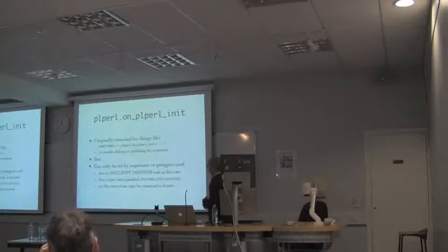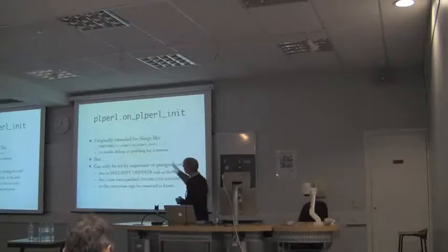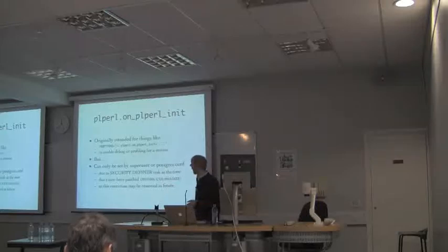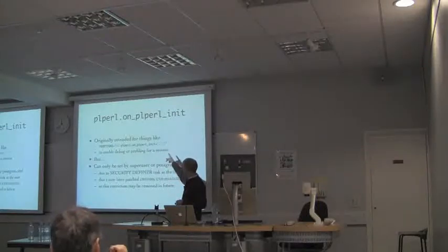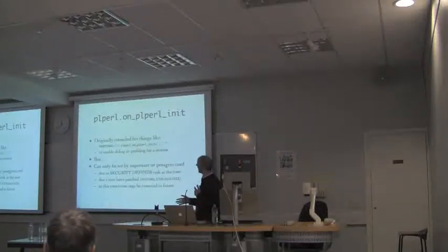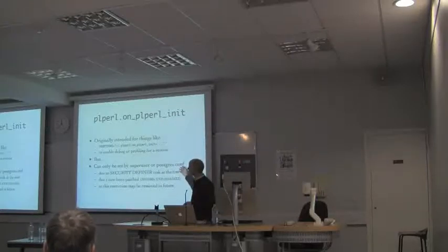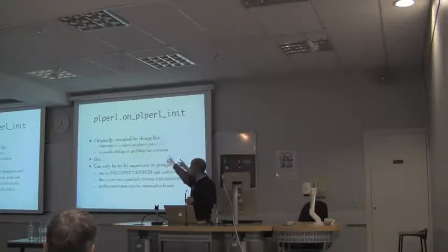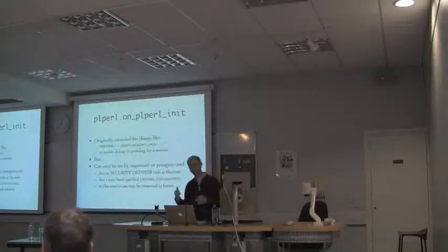The on_plperl_init hook idea was that ordinary users could set an environment variable to, for example, set a debug flag so code would do more tracing. My goal was to trigger profiling and load NYTProf that way. There were concerns expressed about letting ordinary users do that because they could use it to track things. So that restriction may get removed so ordinary users would be able to set PG options — but right now, you can't.